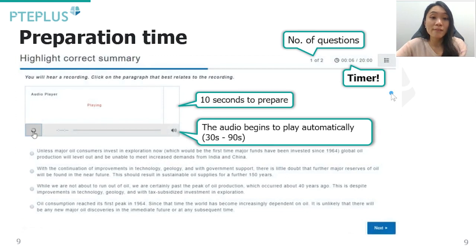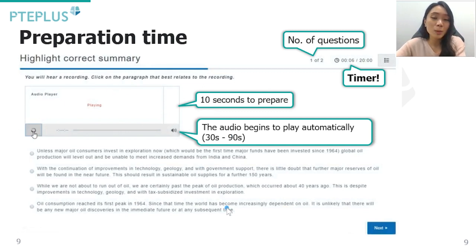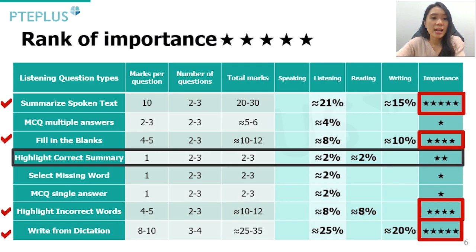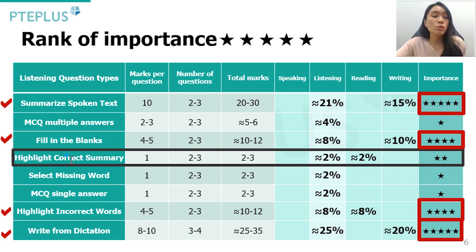Looking at the interface you'll see in the exam: on the top right-hand side you'll see the question number and, very importantly, the timer — this timer covers the entire section, all seven remaining listening question types under one clock. Highlight Correct Summary is the fourth question type, and it's important to manage your time here and in Select Missing Word and MCQ, because the two large question types at the end — Fill in the Blanks and Write from Dictation — are where you can maximize marks. Don't spend too much time on HCS.